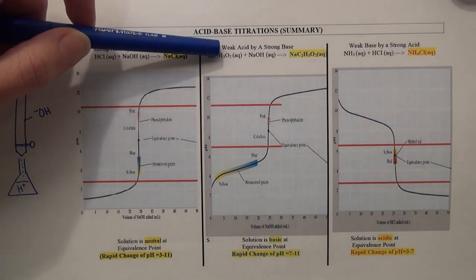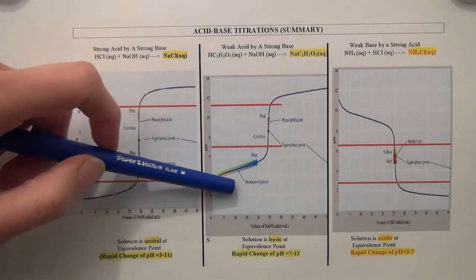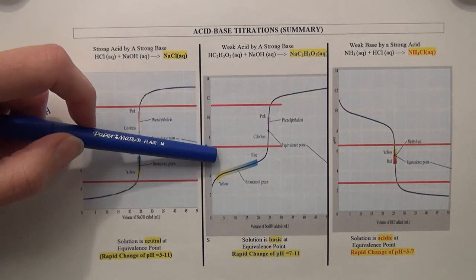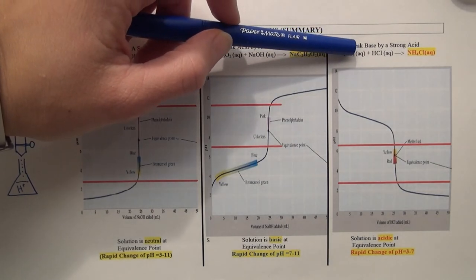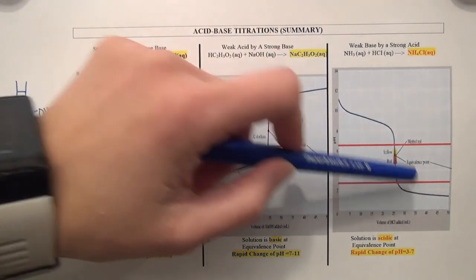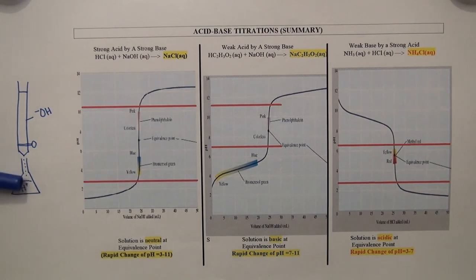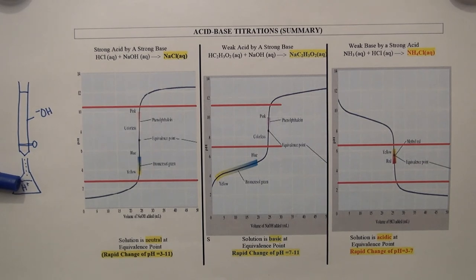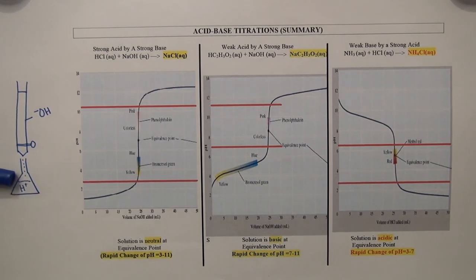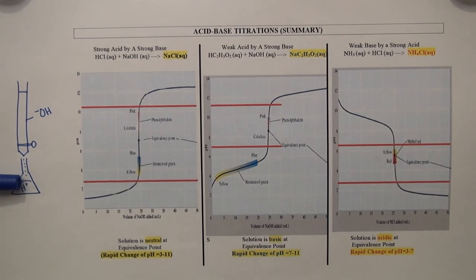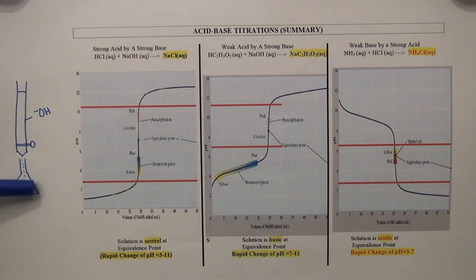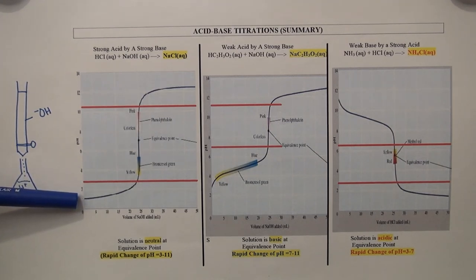In our typical titration setup, the base is in the burette and we titrate it down into the acid in the flask. If we place a pH probe in the flask, we can measure the pH as the titration progresses. For the strong acid–strong base curve, initially the pH is very acidic because we're measuring mostly acid with very little base added.